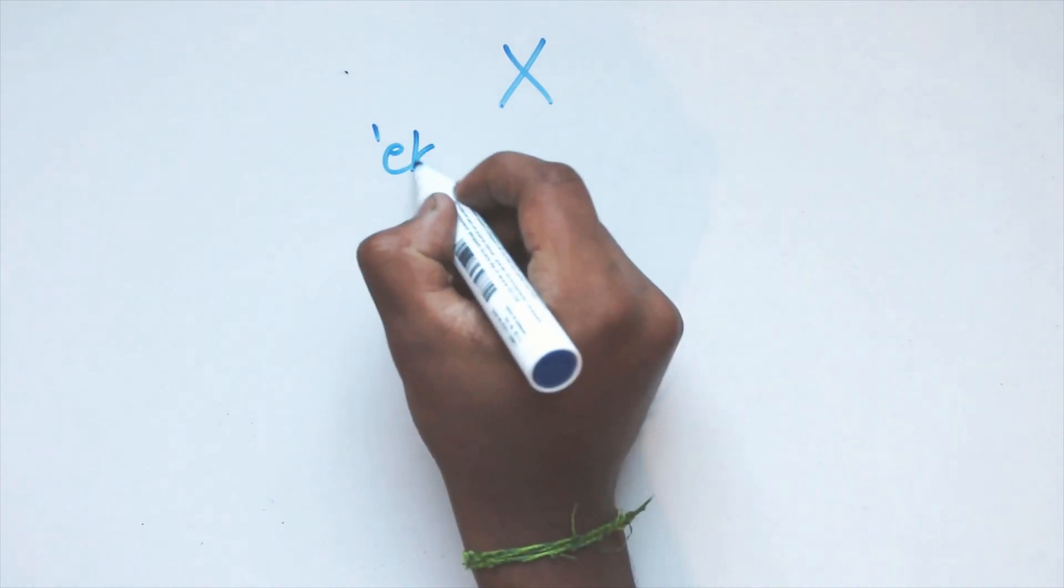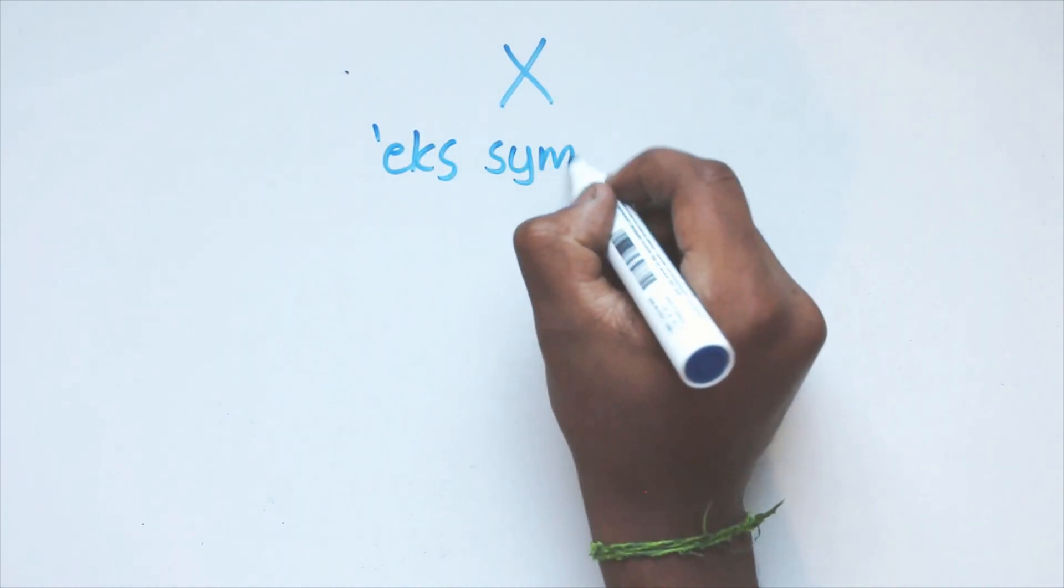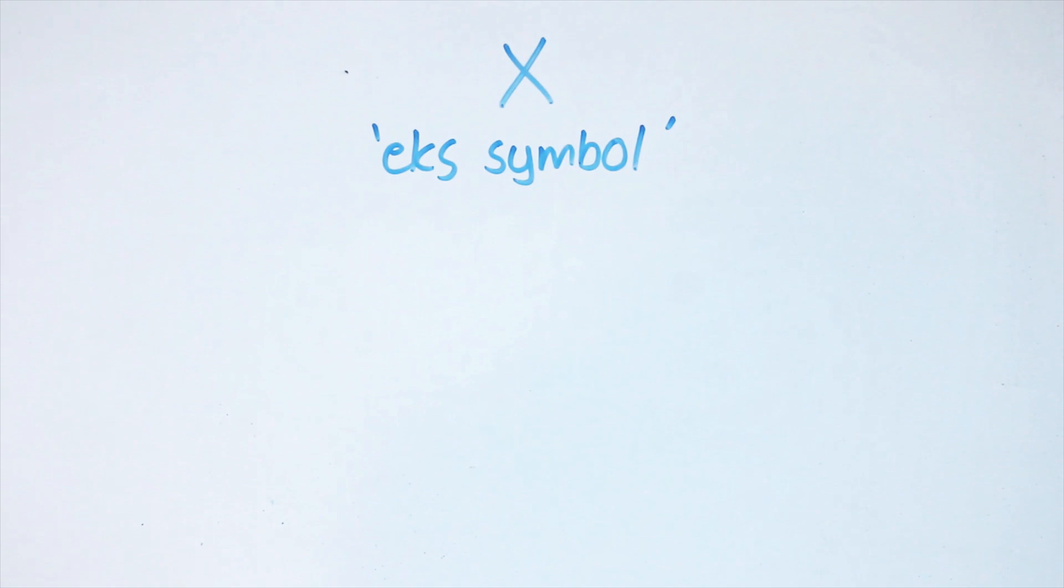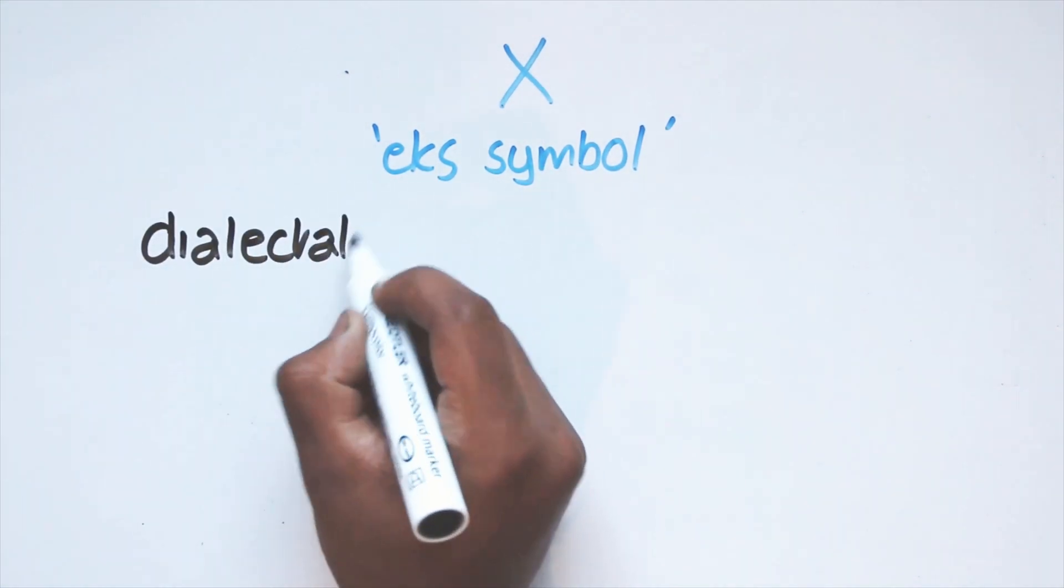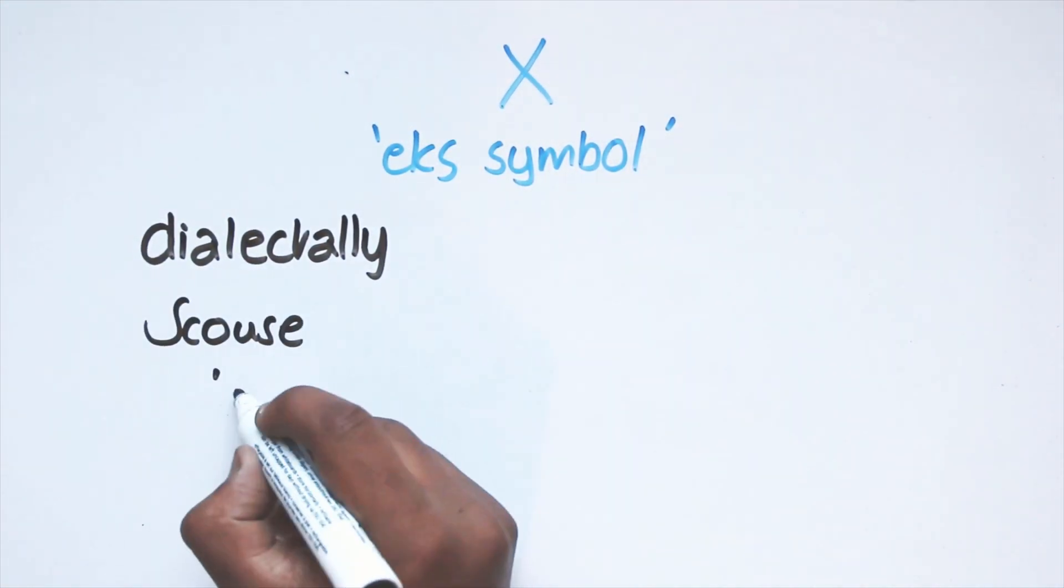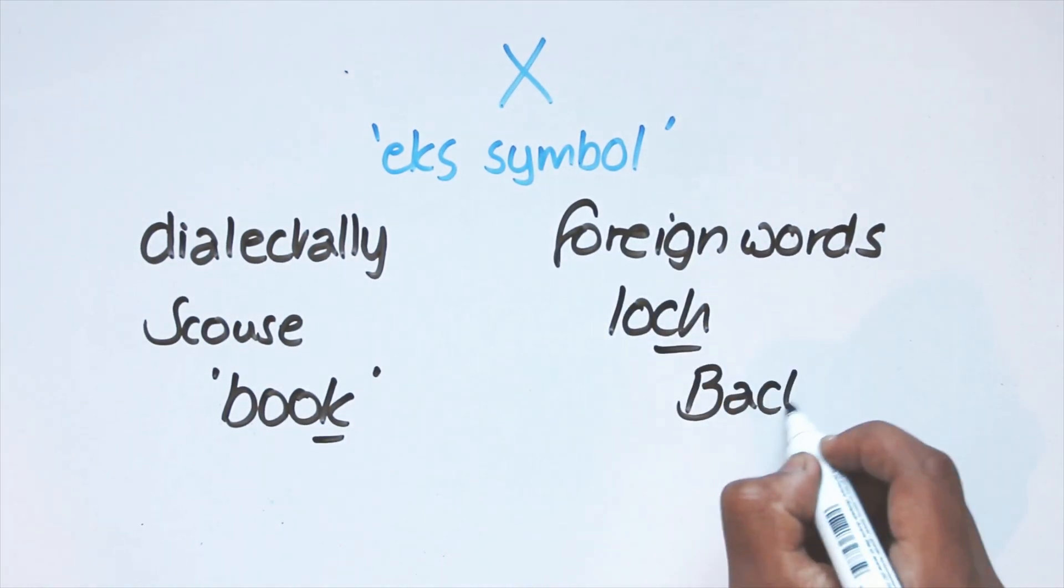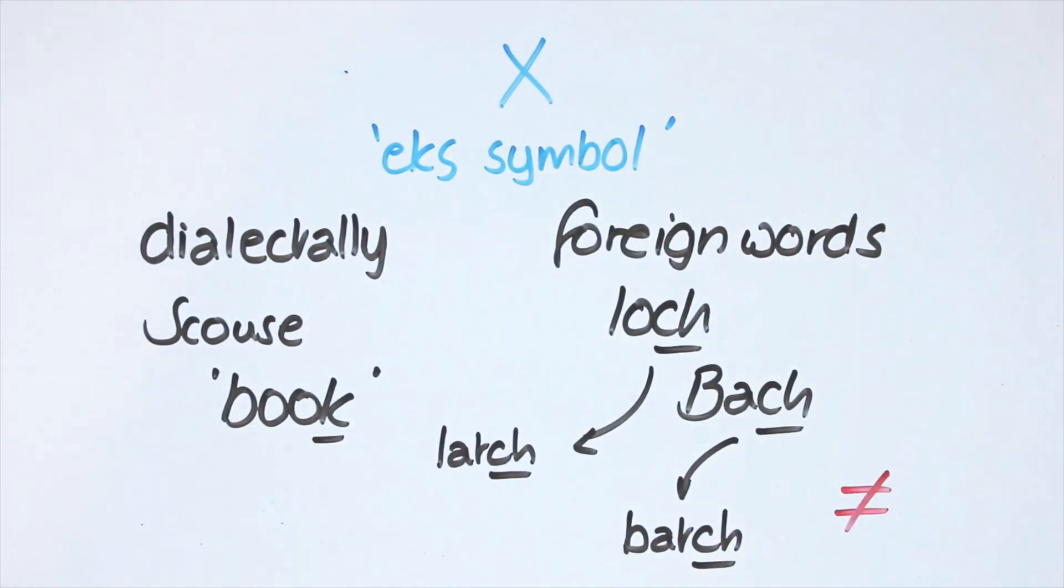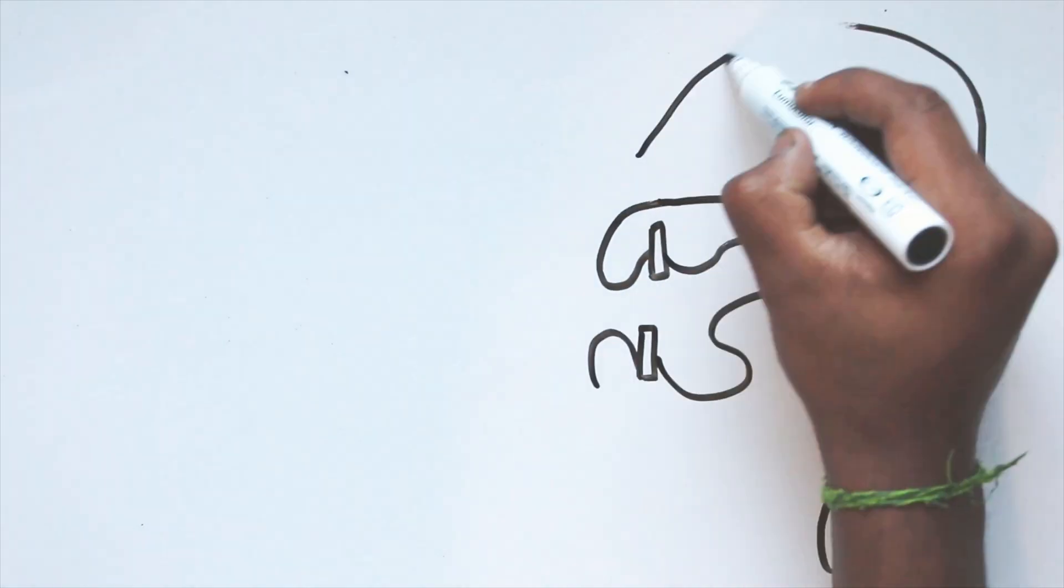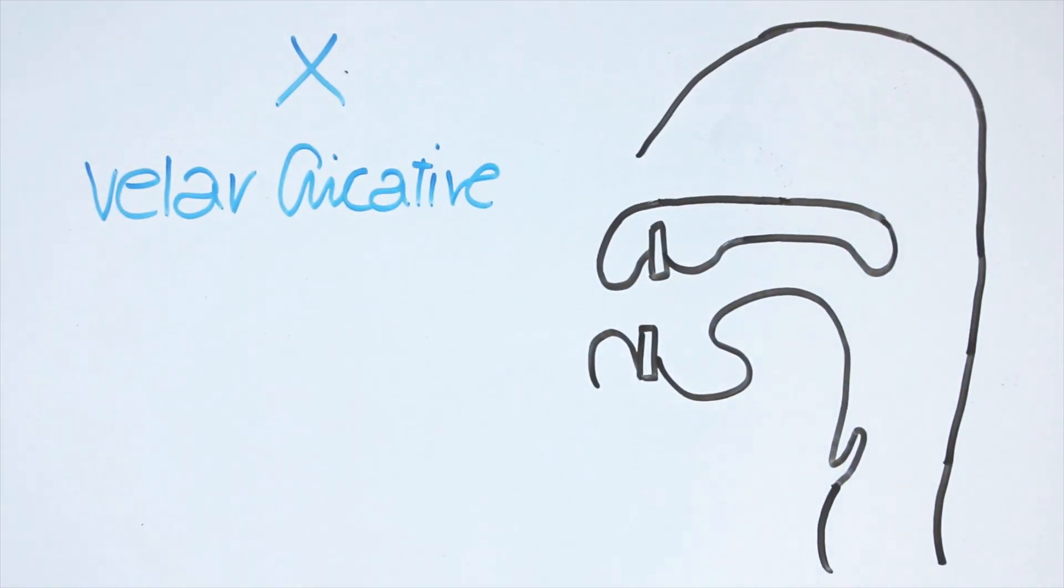Let's look at x now. I represent x with an x symbol, because there is no letter of its own, since it is only found dialectally instead of standard k, as in scouse buch, or in loan words represented by the letters ch, which means something different in other contexts. It is a simple velar fricative, just like k, g and ŋ.